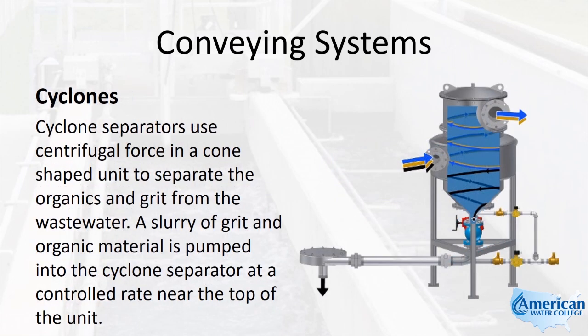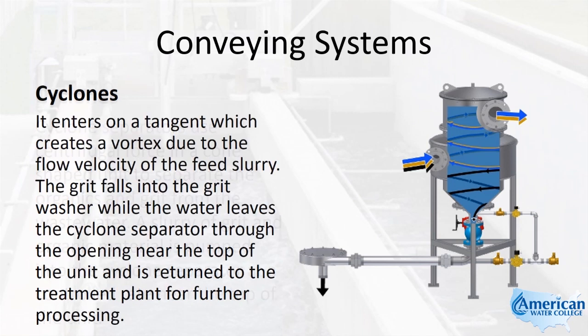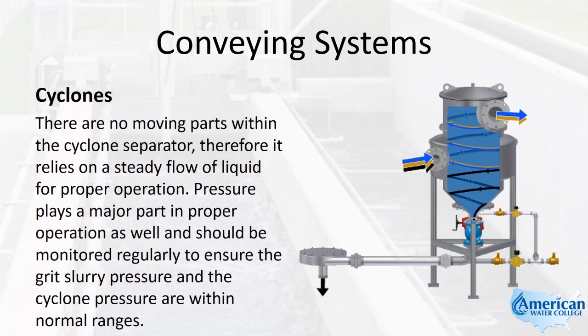Cyclone separators use centrifugal force in a cone-shaped unit to separate the organics and grit from the wastewater. A slurry of grit and organic material is pumped into the cyclone separator at a controlled rate near the top of the unit. It enters on a tangent, which creates a vortex due to the flow velocity of the feed slurry. The grit falls into the grit washer while the water leaves through the opening near the top and is returned to the treatment plant for further processing. There are no moving parts within the cyclone separator, so it relies on a steady flow of liquid for proper operation. Pressure should be monitored regularly to ensure the grit slurry pressure and the cyclone pressure are within normal ranges.